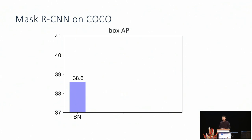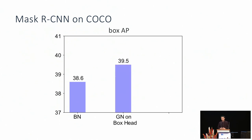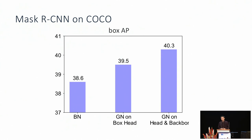We show results on COCO object detection. The standard Mask R-CNN baseline with ResNet-50 and Feature Pyramid Network has 38.6 AP. We obtained a 0.9 AP improvement by only adding group norm to the box head network. Adding group norm to both the head network and the backbone network further improved AP by another 0.8. We have done no hyperparameter tuning — we directly adopted the standard training recipes tuned for batch norm-based models. We also note that group norm is used by this year's winner of the COCO challenge.